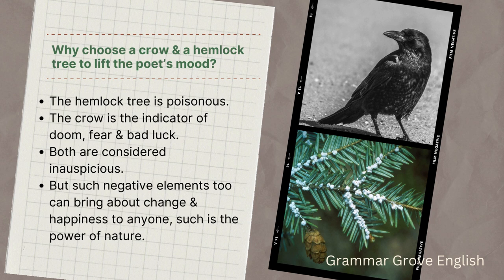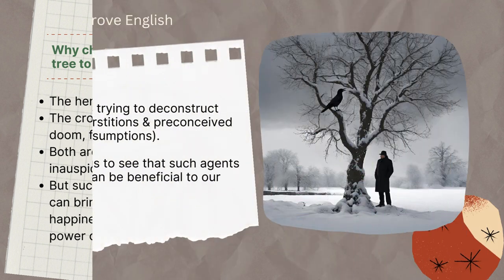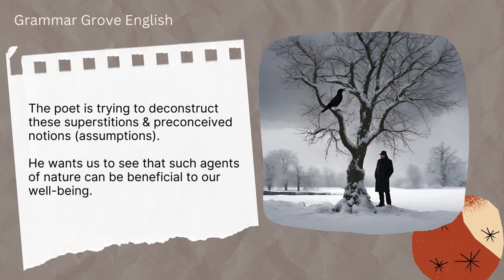In India also there is a superstition of a black cat — whenever a black cat crosses the road, you must stop and wait a few moments before going on your way, otherwise it can bring bad luck and accidents might happen. We don't really know if it's true, but people say that it is. People associate black cats with extreme bad luck, but obviously it is not true. A cat is just an innocent creature, as is a crow and a tree. They do not actually harm us — it is just our preconceived notions. The poet here is trying to break that same preconceived notion and deconstruct the superstitions that we hold.